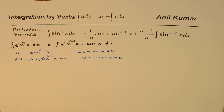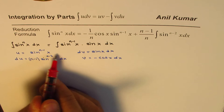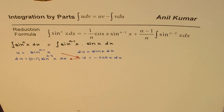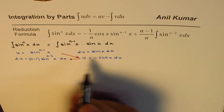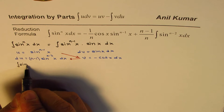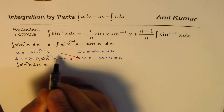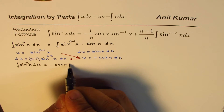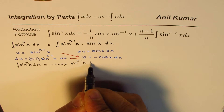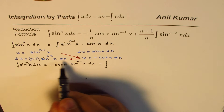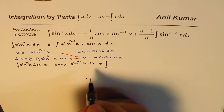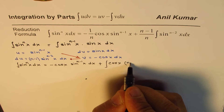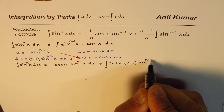Now we can apply the integration by parts formula and write down the integral. We multiply u times v and then subtract the integral of v times du. So we have the integral of sine to the power of nx dx equals minus cos x times sine to the power of n minus 1 of x, minus the integral of minus — which makes it plus — cos x times n minus 1 times sine to the power of n minus 2 of x.